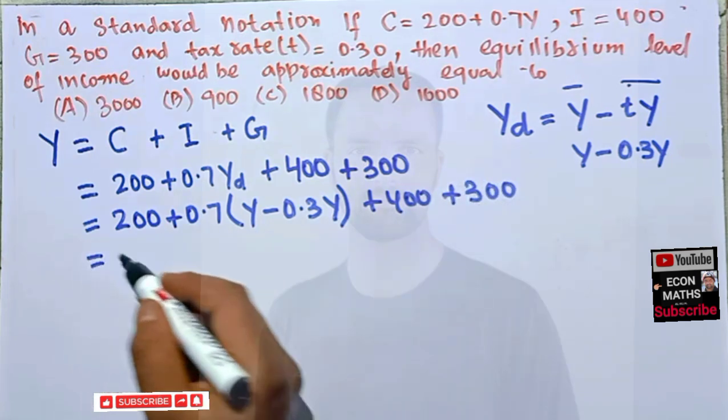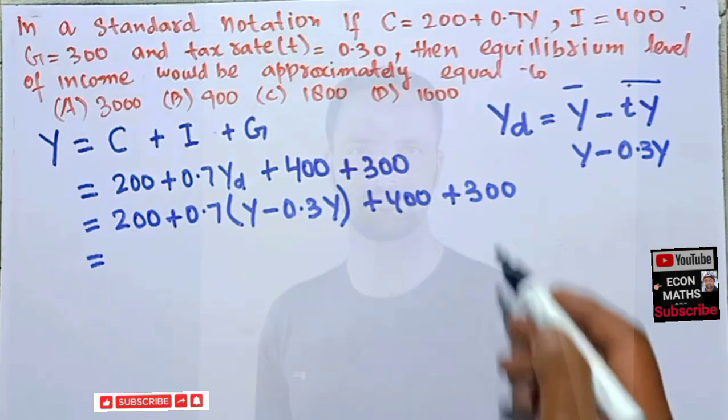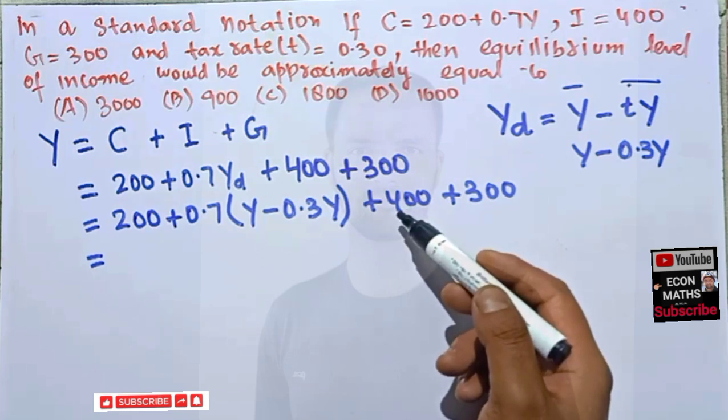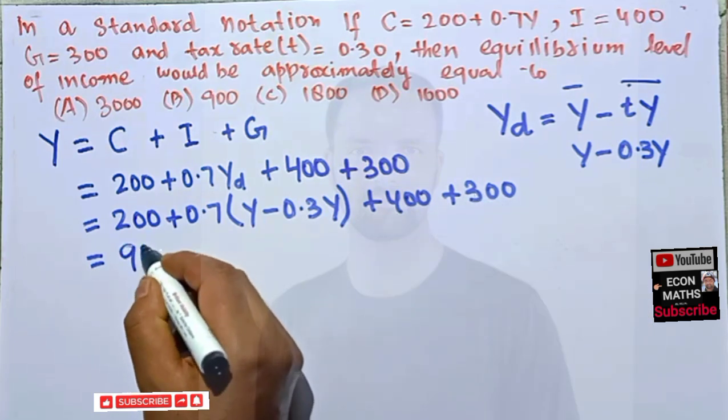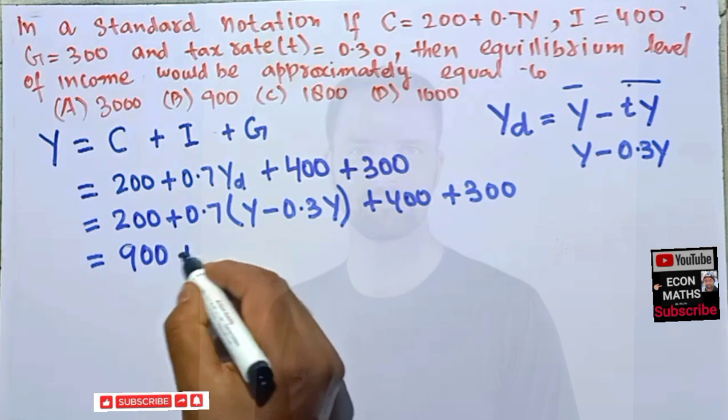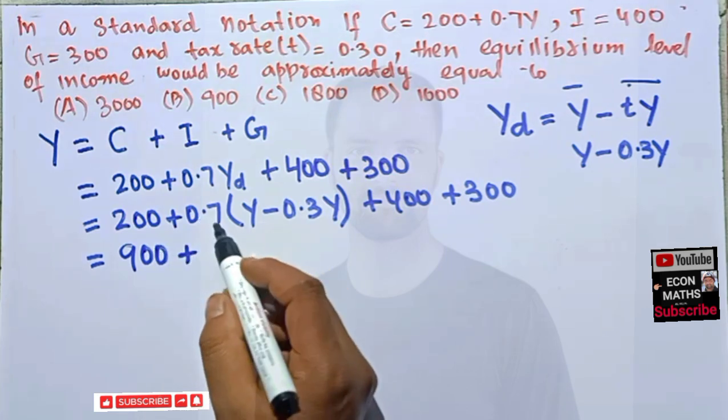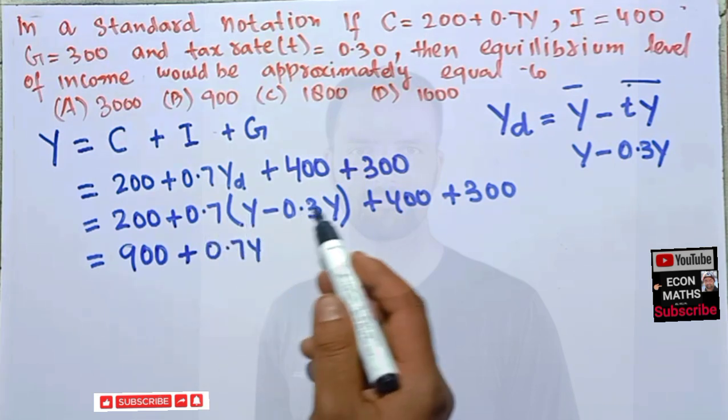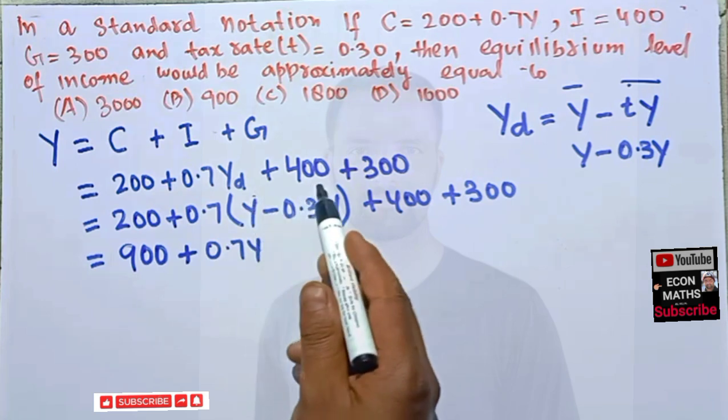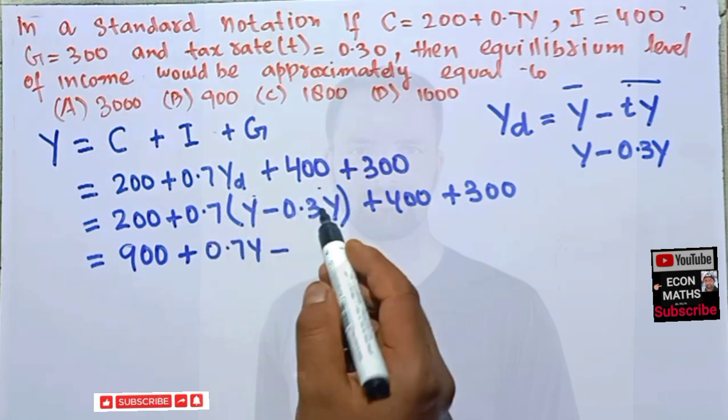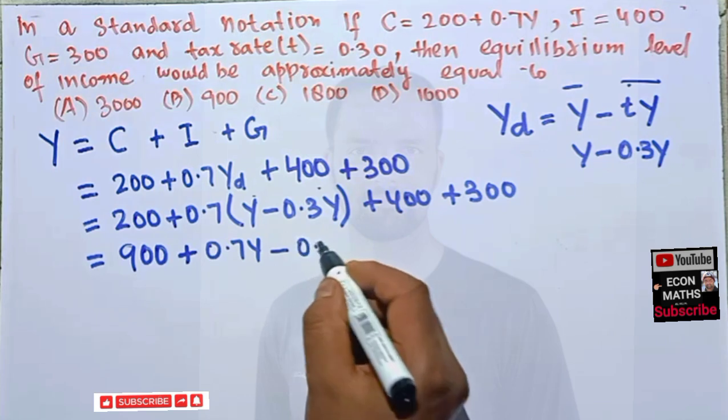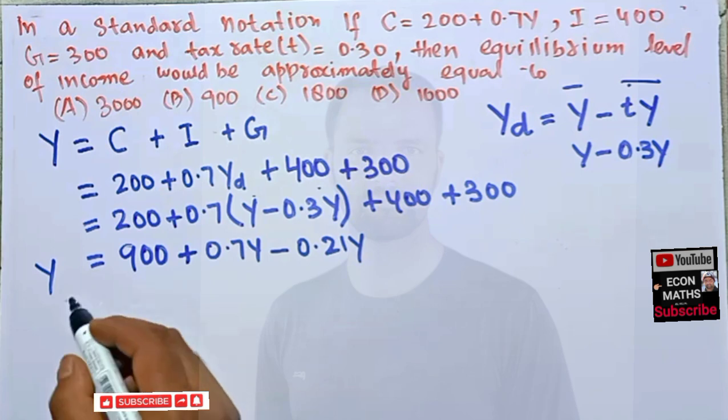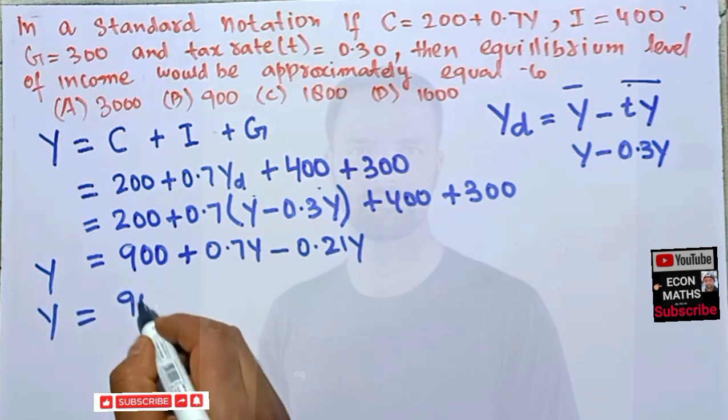Now just rearranging we have 200, 400, and 300 that is equal to 900. So I will write here 900 plus we have here 0.7Y. 0.7Y is multiplied to this term and this term also. So we have minus now 0.7 into 0.3 so here is 0.21Y. That is Y is equal to.